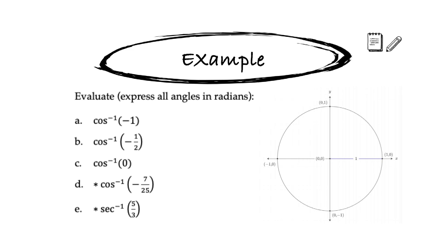Let's do some examples using inverse cosine. I have the unit circle pictured here for reference, but keep in mind that we only want to use the region of the unit circle from 0 to pi, because that is the range of our inverse cosine function. Inverse cosine will never output a value less than 0 or greater than pi.